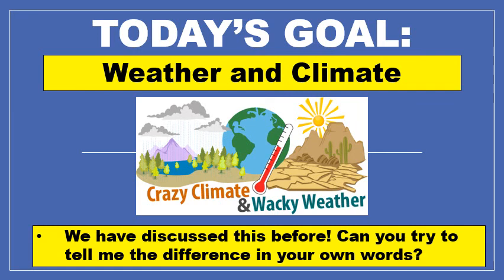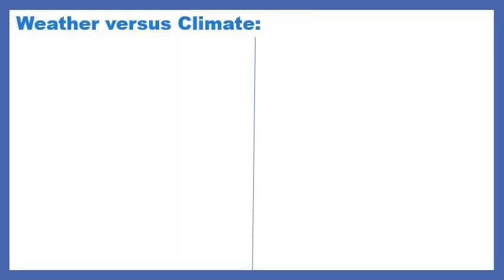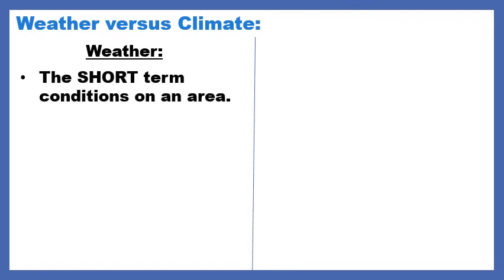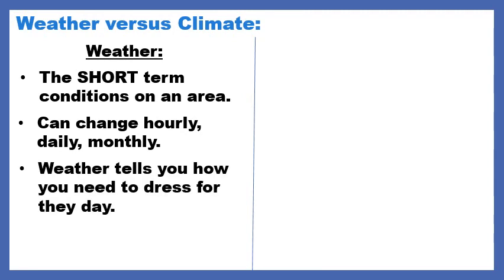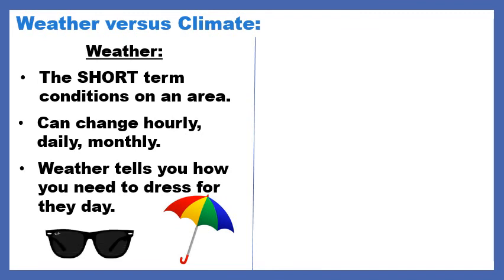If you need to pause the video, go ahead and pause. Hopefully you were able to come up with some differences. Weather is the short-term conditions of an area, so the time span is quite small. Weather can change hourly, daily, or monthly, and you use weather to tell you how you need to dress for the day. If it's raining, that's a short-term condition that could change within the hour, day, or month — you look at the weather report and you need an umbrella. Or if you see sun in the forecast, you might need to put on your shades.